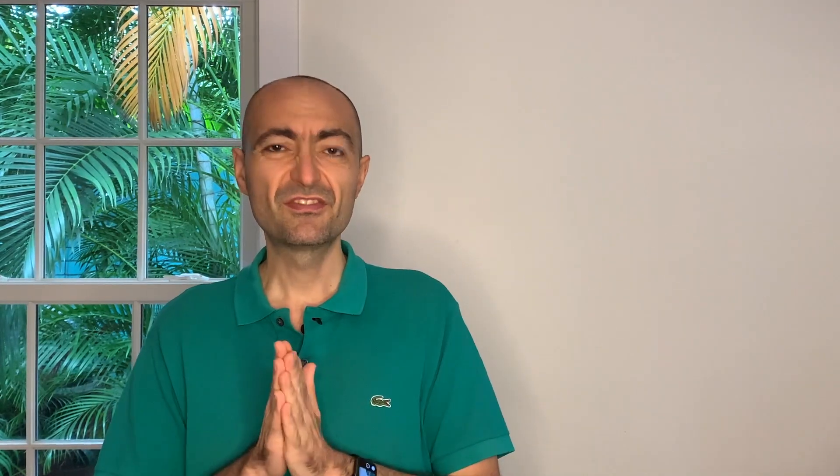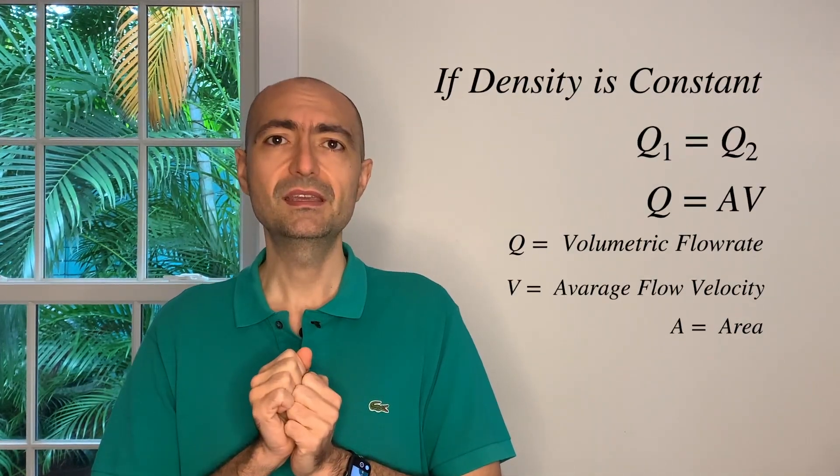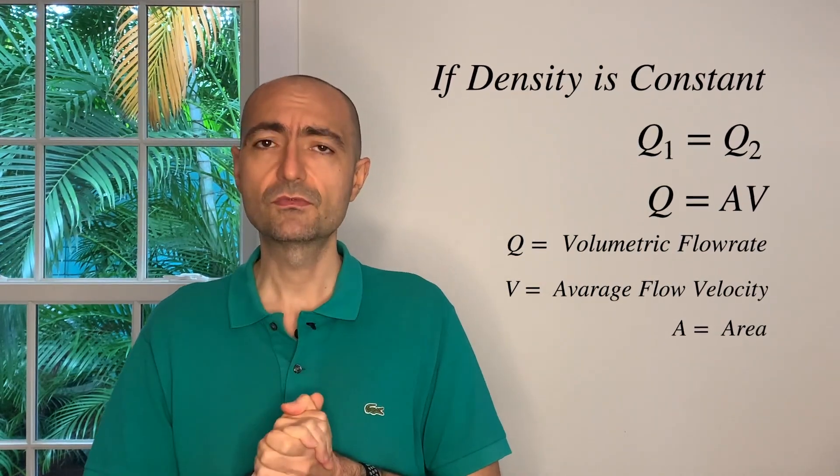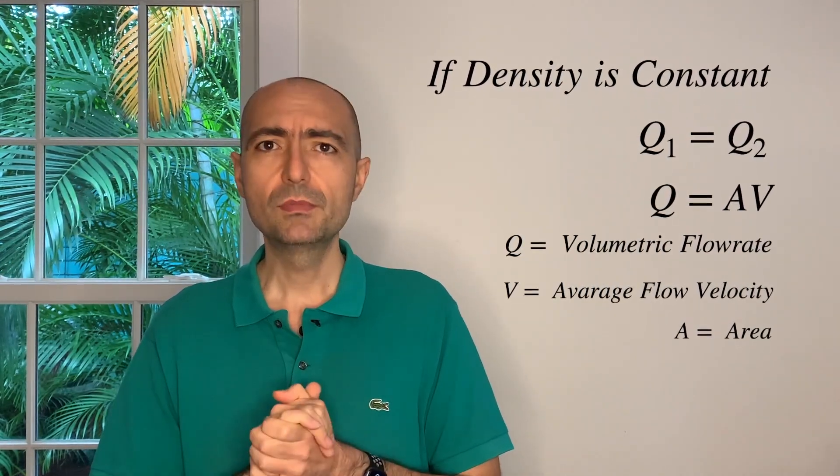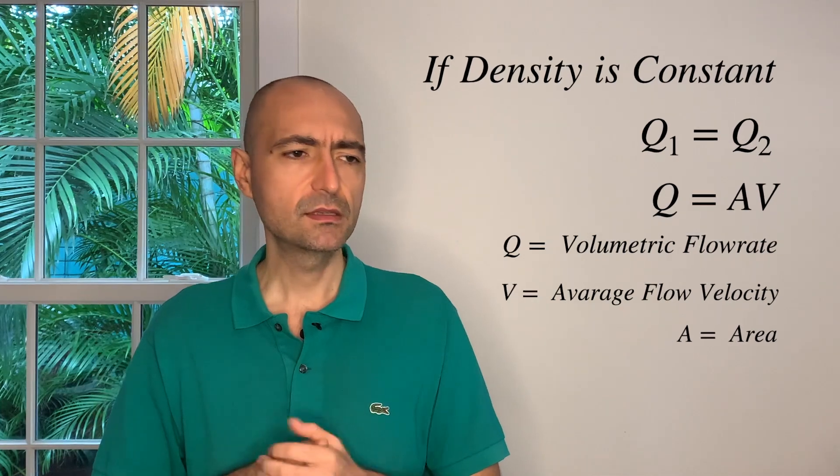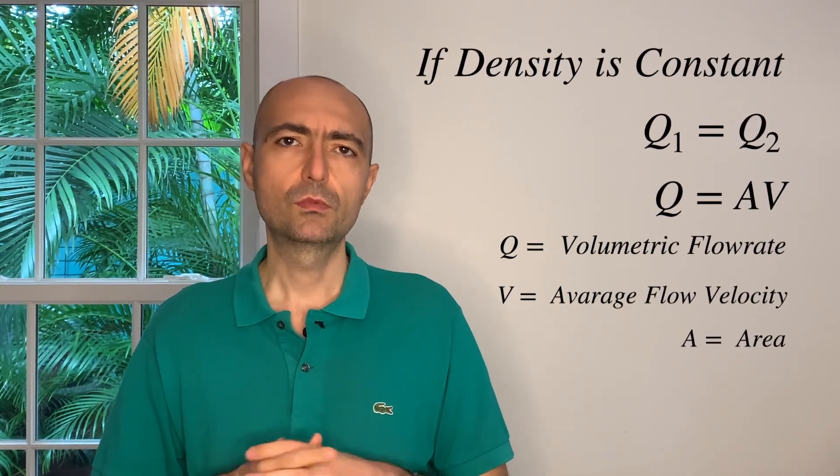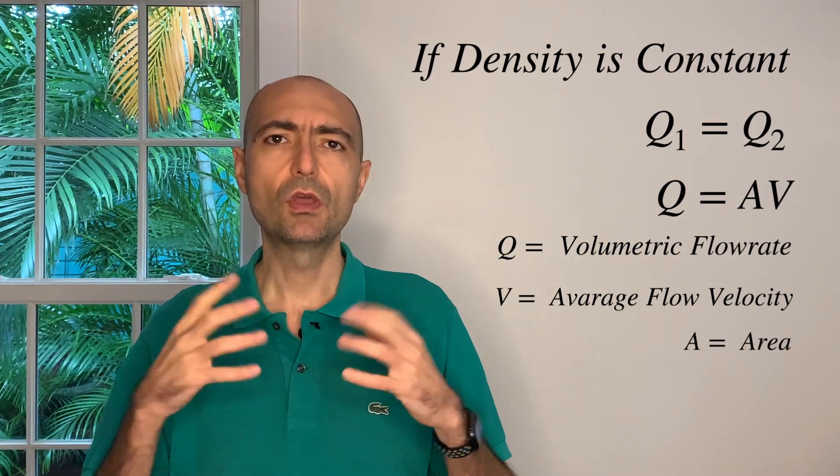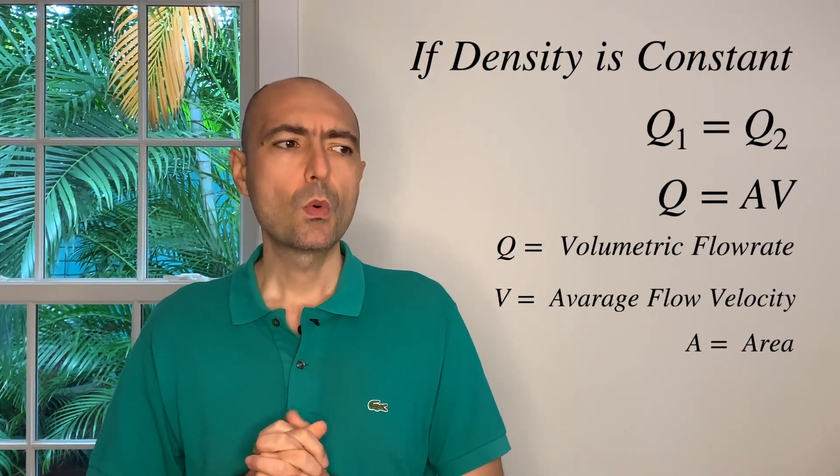Velocity times area is called volumetric flow rate, that is also important. If my density is constant, and that's a good assumption for liquids, I will be able to write that densities cancel, so I get volumetric flow rate 1 equals volumetric flow rate 2.